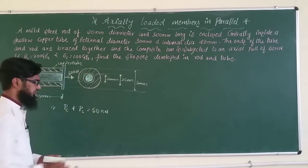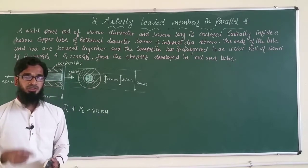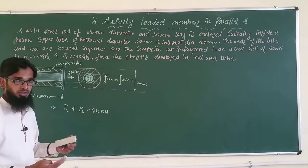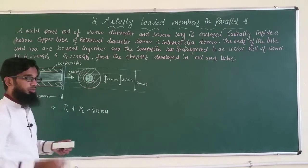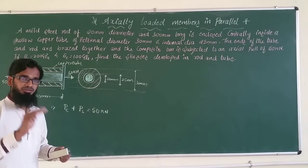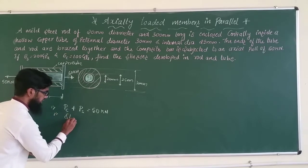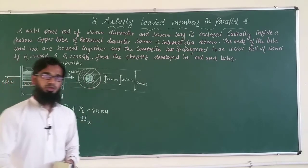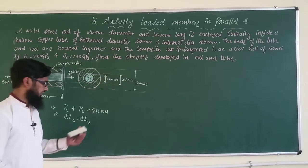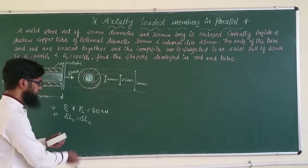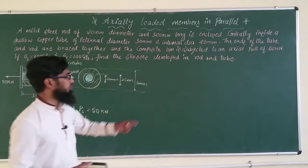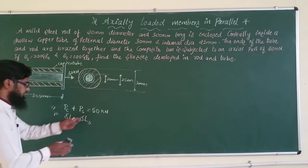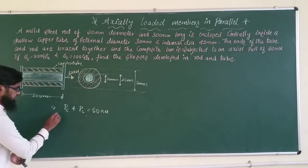The second condition: since both ends are joined together, when a load is applied there will be deformation in both materials, and both deformations are equal. So δL_c = δL_s — the change in length in the copper tube equals the change in length in the steel rod. Applying these two conditions, we can calculate the stresses in both materials.